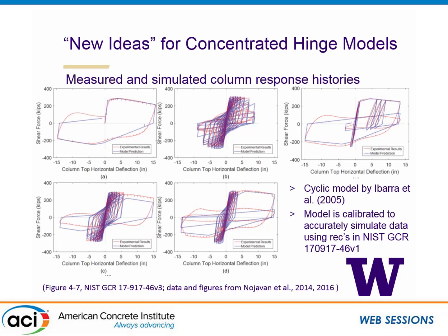These are data for identical columns subjected to different load histories. The document explains how you might calibrate this Ibarra-type model where the envelope and other model parameters deteriorate with the load history. On the steel side, a lot of work has been done to develop those parameters; on the concrete side, much less work has been done. One of the interesting things coming out of this document is that this is something we should be doing for reinforced concrete, and here are ways to take experimental data and do that.